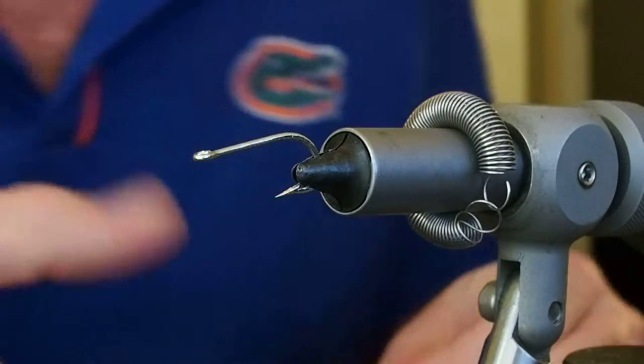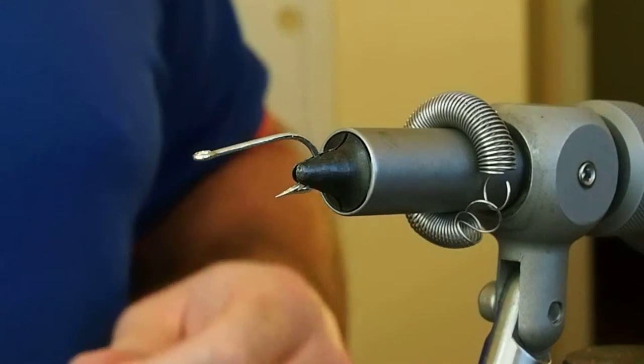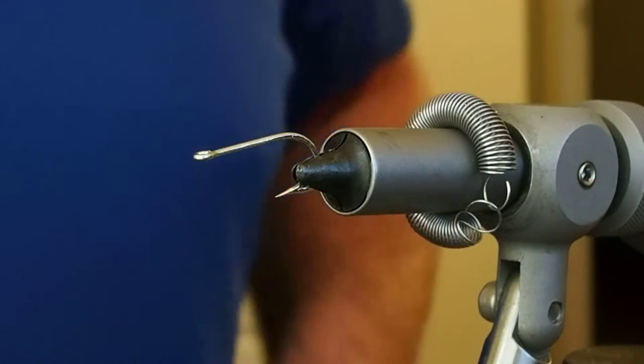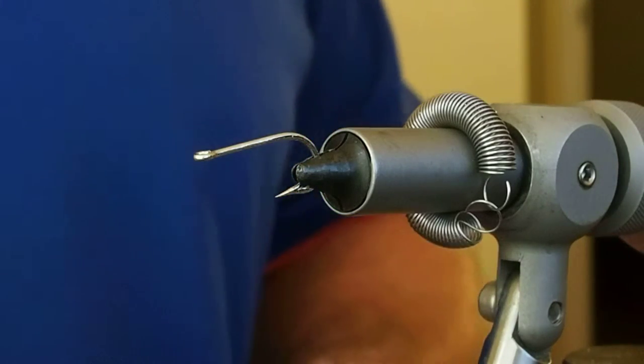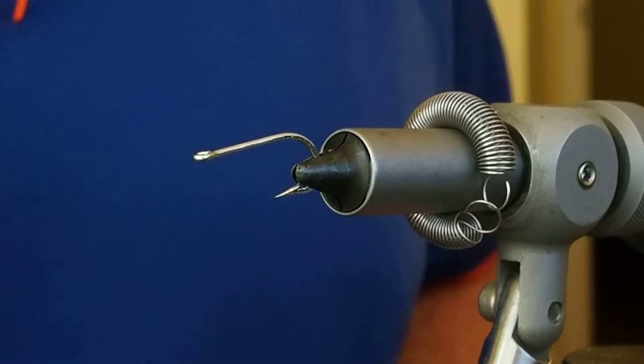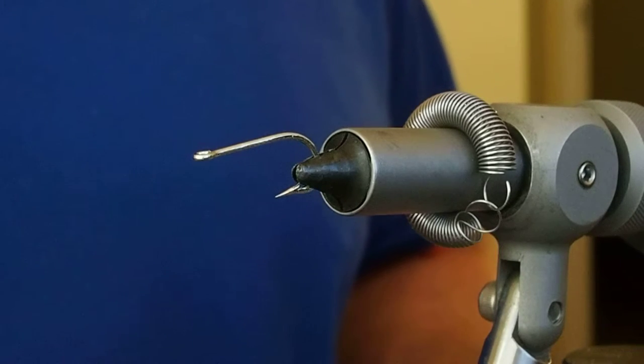Alright, in this video I'm going to be tying up a Connecticut River Shadfly. This is a pattern found in C. Boyd Pfeiffer's book Shadfishing, and I can't seem to find it online, so I'm going to give it a shot.